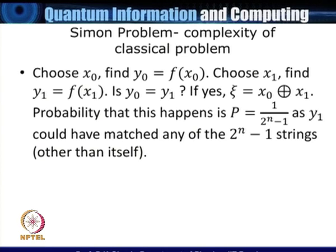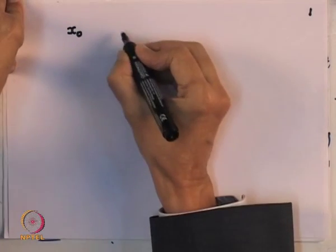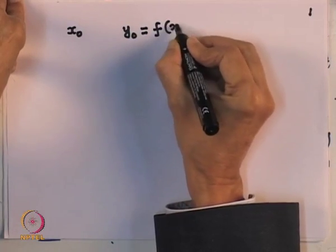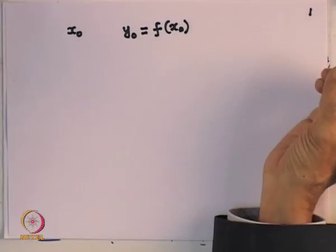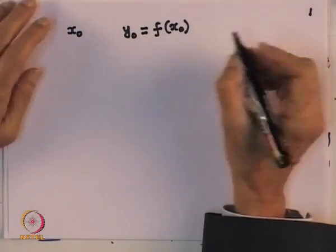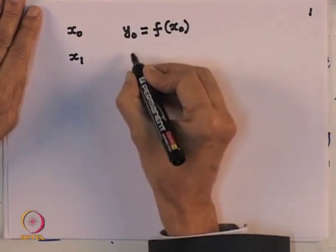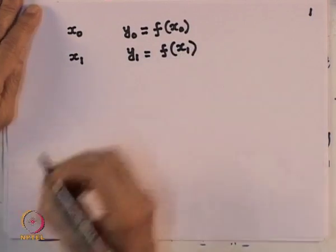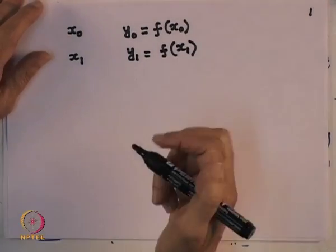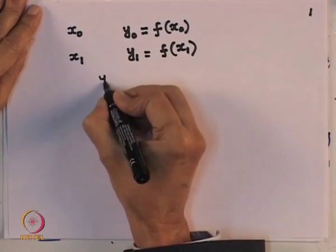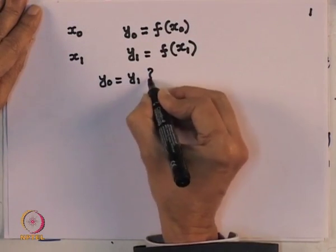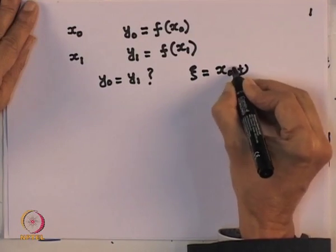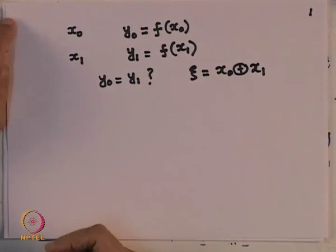Proceeding more systematically: pick x0, find y0 = f(x0). This gives no information — we just have a starting point. Then pick a second string x1, calculate f(x1), and compare: is y0 equal to y1? If yes, then ξ is simply x0 XOR x1, computed bitwise.